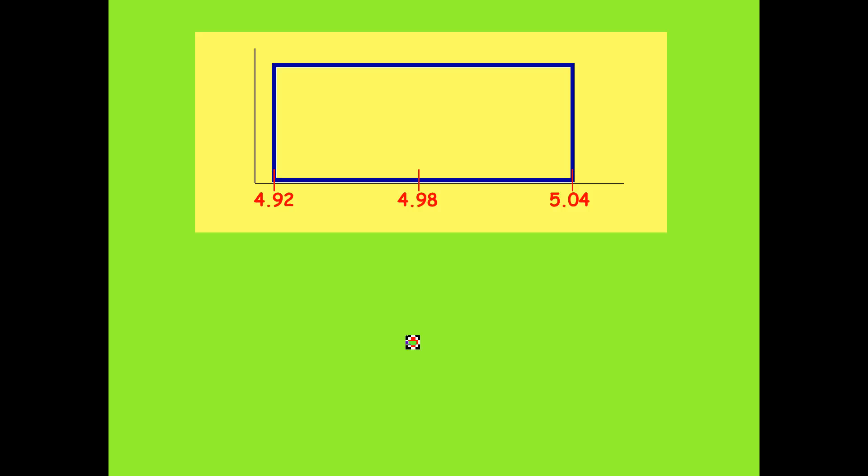This is a uniform distribution. It's a density curve in the shape of a rectangle. It begins at 4.92 and ends at 5.04. And you'll notice this number in the middle. It's obviously in the center. This is the mean, this is mu, the mean of this specific uniform distribution.